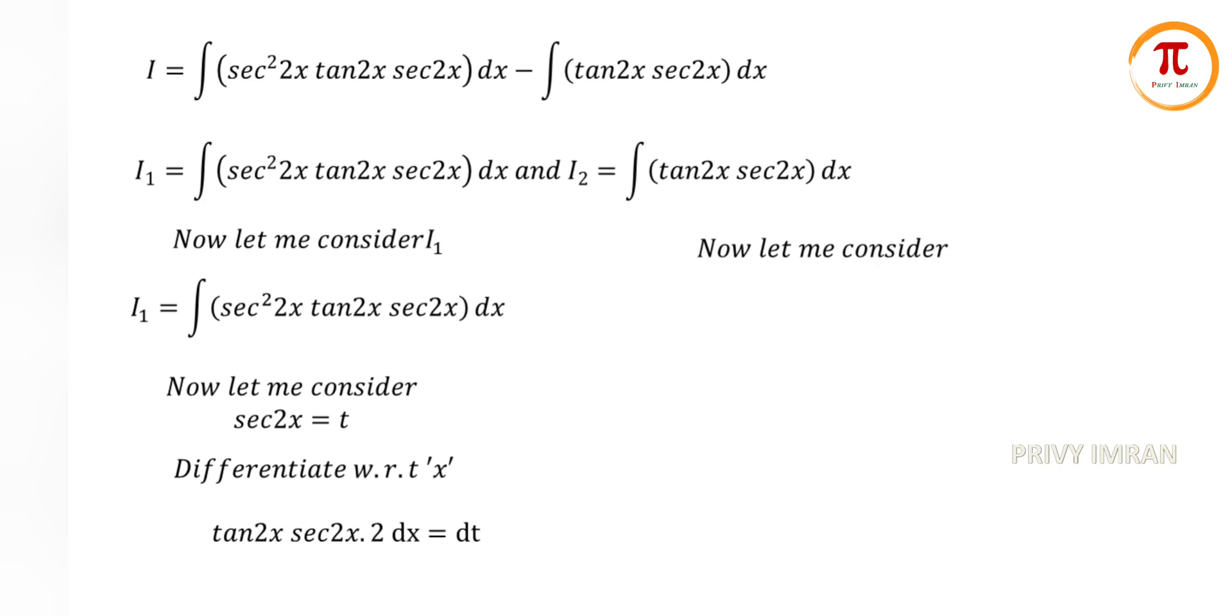Now let me consider I2, where I2 is equal to integration of tan 2x into secant 2x dx. If you apply the integration, then I2 can be written as secant 2x divided by 2 plus c.